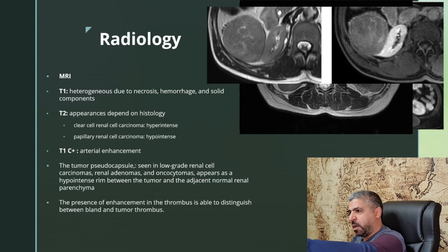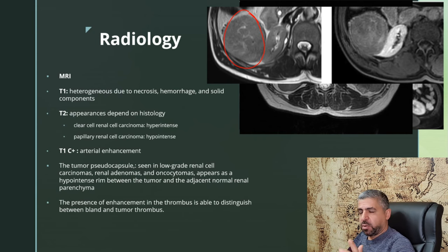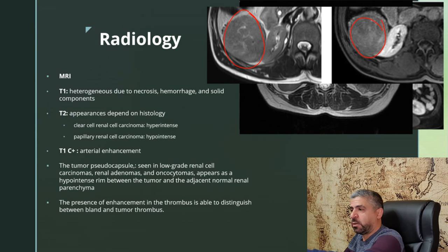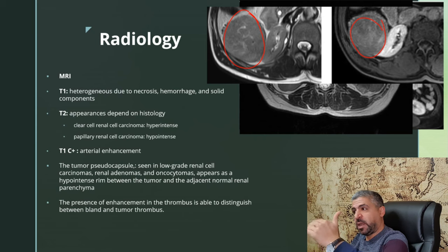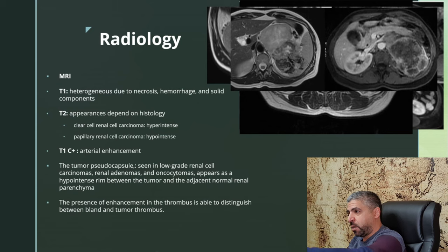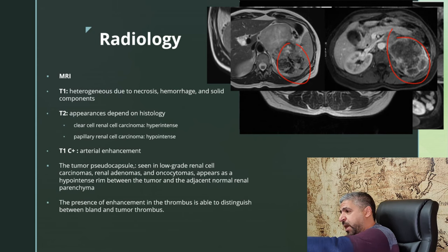In another case, the T2-weighted image shows an iso-intense tumor, so we cannot determine the subtype confidently. After contrast enhancement, delayed venous phase imaging shows relatively mild heterogeneous post-contrast enhancement washout, emphasizing the importance of the arterial phase. The tumor pseudocapsule is also visible here. In a large renal cell carcinoma replacing almost the entire kidney, the lesion is heterogeneously hypo- and hyperintense on T2 with heterogeneous post-contrast enhancement and areas of central necrosis.